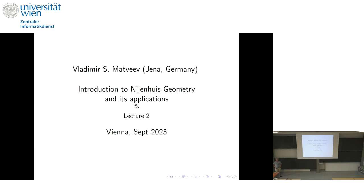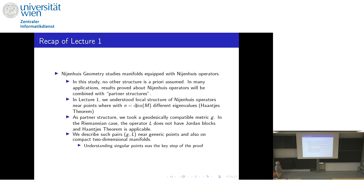Welcome to the last lecture of today, which is simultaneously my second lecture. Let me start with a recap of lecture one, pointing out the important pieces. The science or research program of Nijenhuis geometry studies manifolds equipped with Nijenhuis operators, and no other structure is a priori assumed in theoretic study. The structure is a (1,1)-tensor on the manifold such that its Nijenhuis torsion is zero.